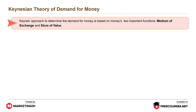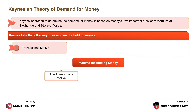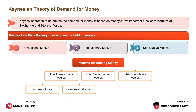Keynes' approach to determine the demand for money is based on money's two important functions: medium of exchange and store of value. Keynes lists the following three motives for holding money: transactions motive, which includes income motive and business motive; precautionary motive; and speculative motive.